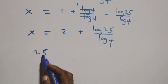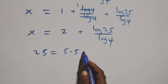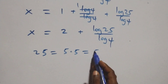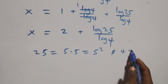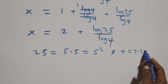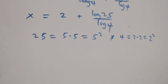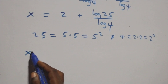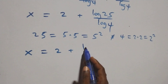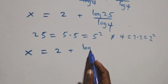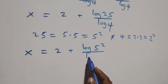We can express 25 as 5 times 5, which is the same as 5 squared. Also, 4 is 2 squared. This implies x equals 2 plus log(5 squared) over log(2 squared).